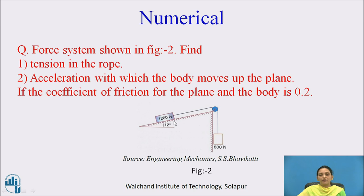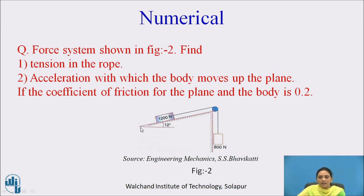We will now solve a numerical using D'Alembert's Principle. A block of 1200 Newton is on an inclined plane, connected with a rope passing over a frictionless pulley, with another block of 800 Newton attached to the other end. The inclination of the plane is 12 degrees. Find the tension in the rope and the acceleration with which the body moves up the plane. The coefficient of friction between the plane and the body is 0.2.